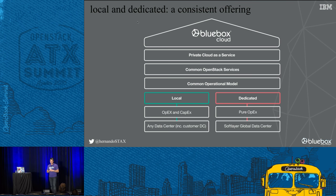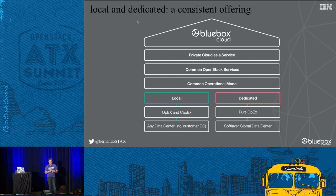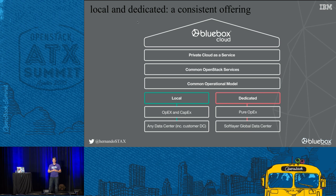To give more clarity on local and dedicated: we start at the very bottom with any customer data center or a SoftLayer data center, and we can deploy on either consistently. These can be consumed in either an OpEx or CapEx model depending on what's most appropriate. In SoftLayer dedicated, it's OpEx only; going local into the customer's four walls, it can be OpEx or CapEx — that's choice with consistency. On top of that is the local or dedicated product. What ties it all together is the common operational model: the same code, same operations team, same release procedures, same remote management technology, and same monitoring. Whether you're buying local or dedicated, you get the same experience.